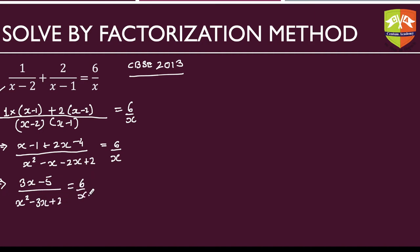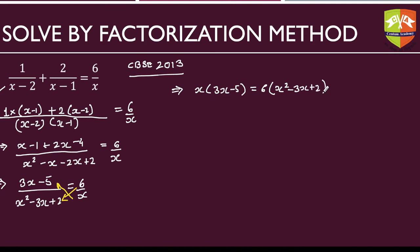Now we cross multiply: x times (3x minus 5) equals 6 times (x squared minus 3x plus 2). Expanding the left side gives 3x squared minus 5x, and the right side gives 6x squared minus 18x plus 12. Be very careful with the arithmetic at this step.